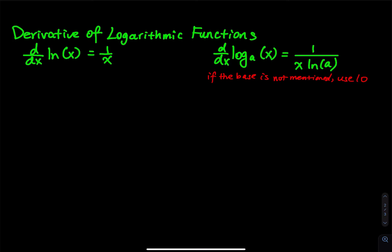Derivative of logarithmic functions — we have two formulas. The first is the derivative of natural logarithm ln(x), which equals 1/x. This formula is super popular in both differential calculus and integral calculus. You study derivatives first and then integration. This formula appears everywhere in these two classes.